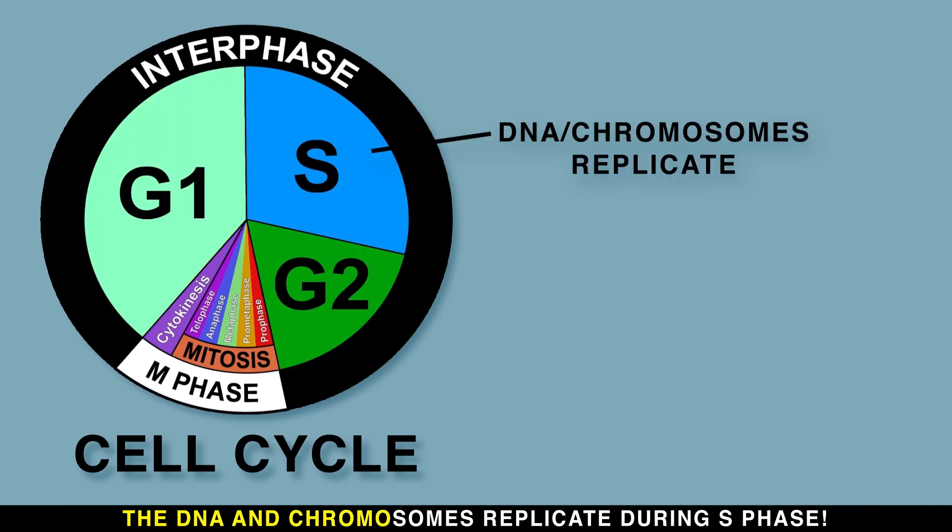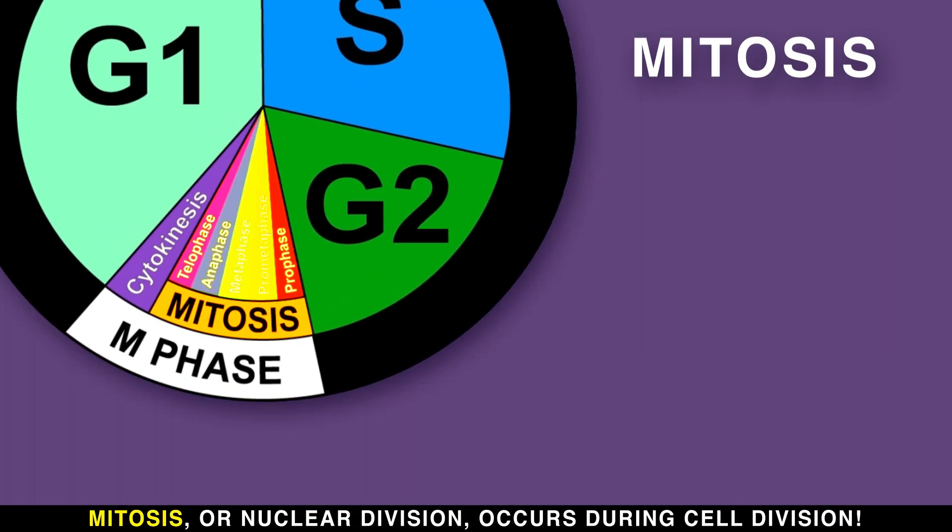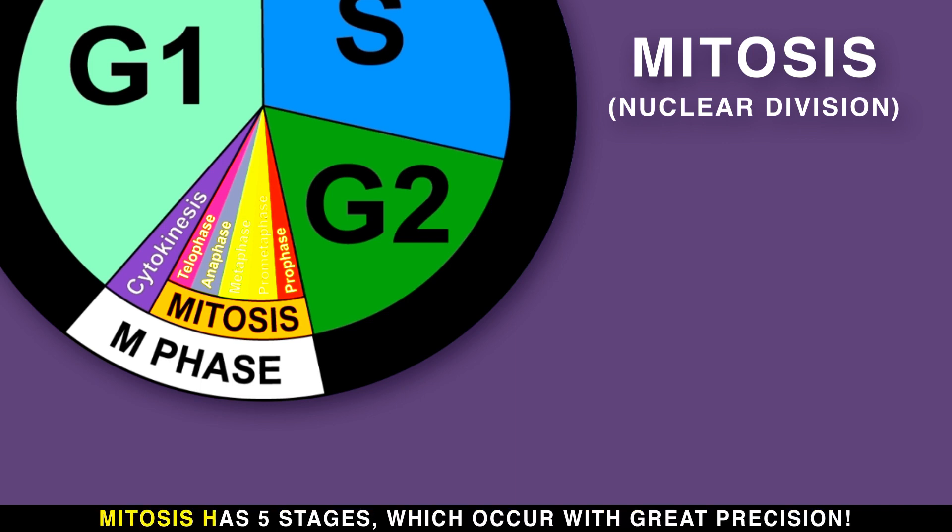The DNA and chromosomes replicate during S phase. Mitosis or nuclear division occurs during cell division. Mitosis has five stages which occur with great precision.